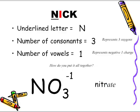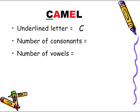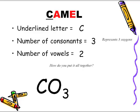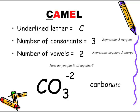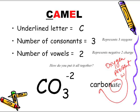Let's look at the next example — camel. The underlying letter is C. Number of consonants: three. Number of vowels: two. So how do we put it all together? We start off with C. Three consonants means three oxygens, so CO3. Two vowels represent two negative charges, so CO₃ negative two. It's a derivative of carbon, but the ending has an -ATE, so it's carbonate. We don't make reference to the oxygen — the -ATE ending tells us that oxygen is present with whatever's in front of it, carbon.